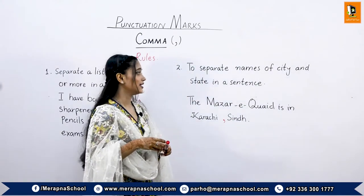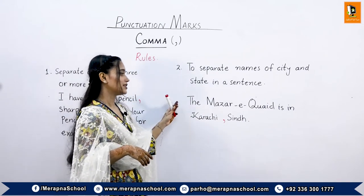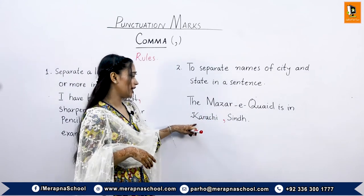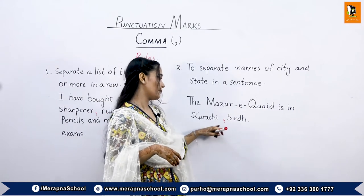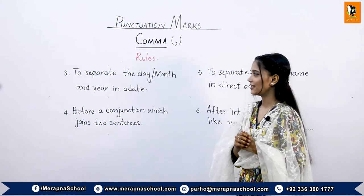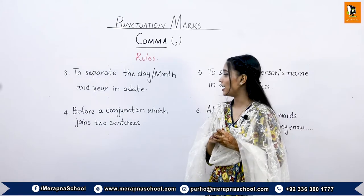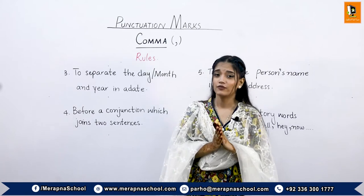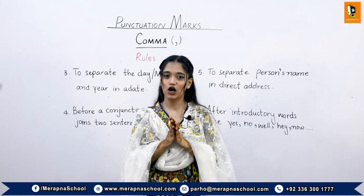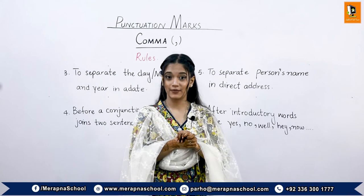For example, in the sentence 'The Mazar-e-Qaid is in Karachi, Sindh,' the name of the city and state or province is separated by the comma. The third rule is to separate the day, month, and year in a date — for example, 'What is the difference between March 23, 2013 and March 23, 2020?'